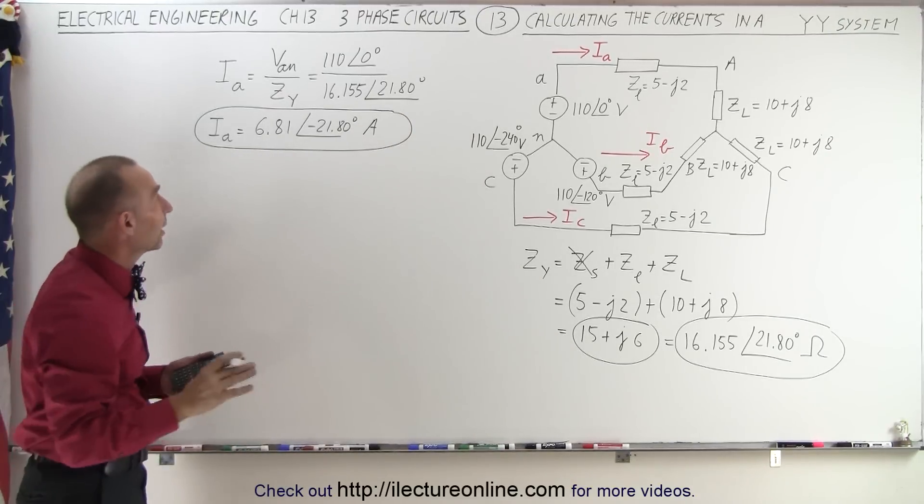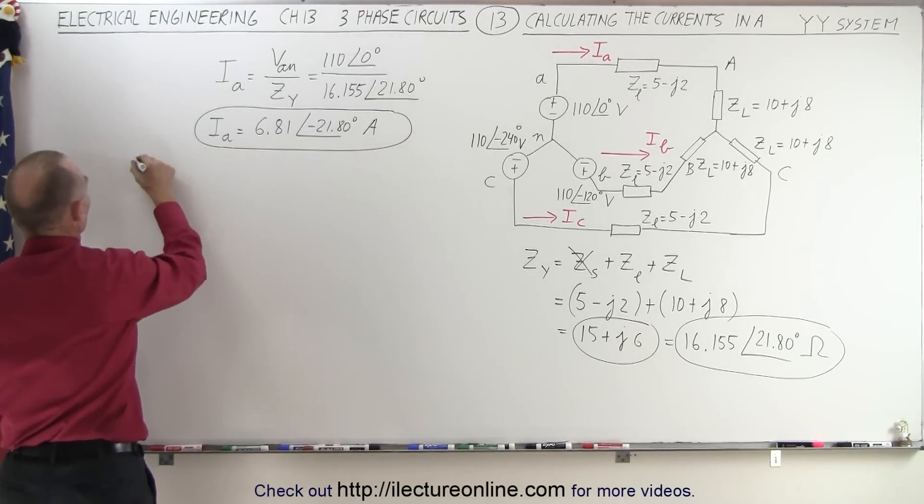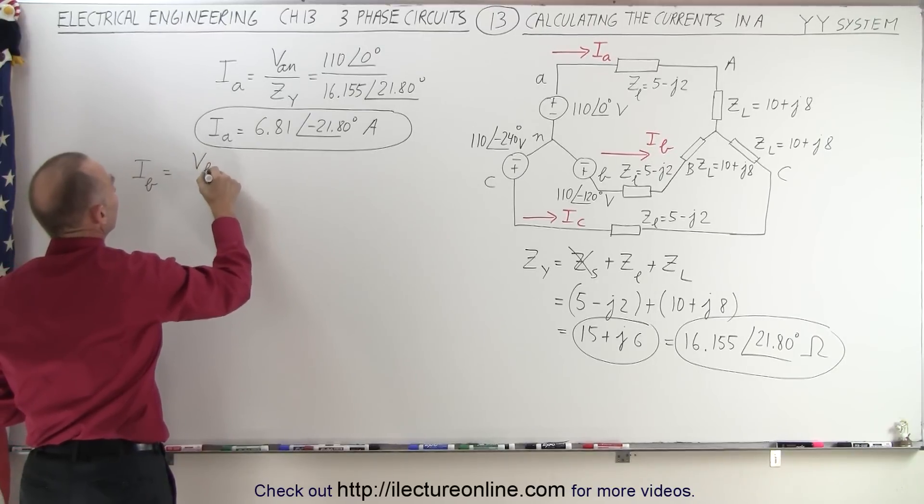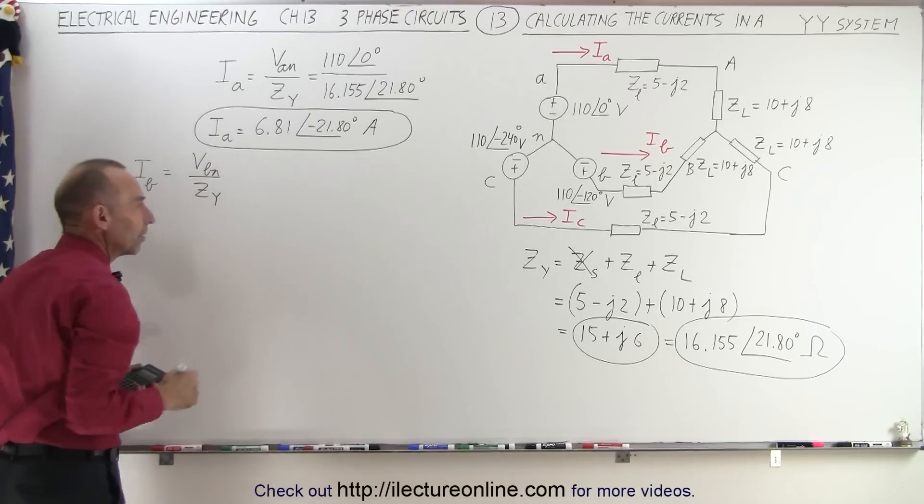Now we do the same for line B. The current on line B is equal to Vbn divided by Zy. Of course, to have a balanced system,